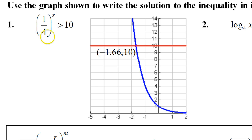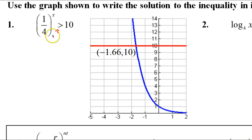This problem is really saying: for what values of x is the function greater than 10? When you see this greater than sign, in terms of the graph I want you to think 'above.' For what x values is the graph above 10? Where is the function above 10? In the graph, the 10 is this red line.